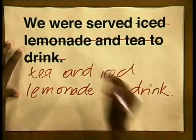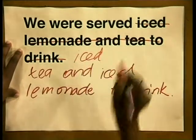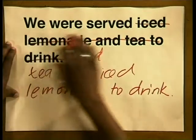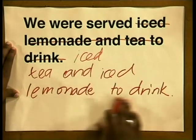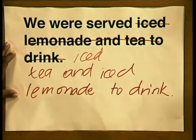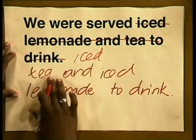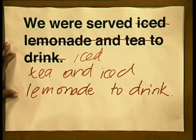But what if it was a summer party and iced tea was served? How could we change the sentence then? We can add the word 'iced' to tea to make the sentence: 'We were served iced tea and iced lemonade to drink.' Now the problem has been solved by repeating the adjective 'iced' once for tea and again for lemonade. This example shows you that you must make sure that the adjective applies to the word that you intended, and if necessary, you may have to rewrite the sentence. Make sure that the adjective applies to the noun that you intended.